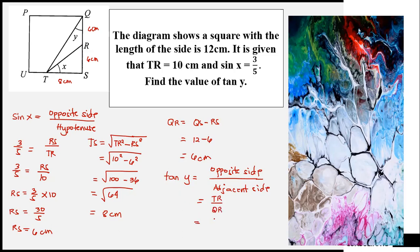TR is 10 and QR has a measurement of 6. Reduce this to lowest term. It will be divided by 2. So 10 divided by 2 is 5. 6 divided by 2 is 3. So tan y is equal to 5 over 3.